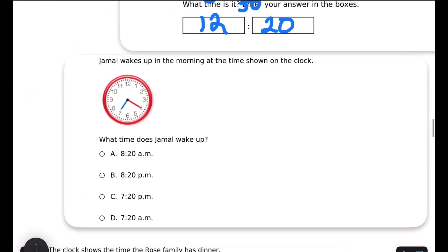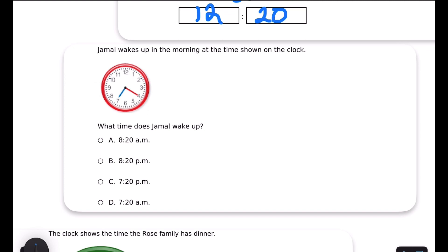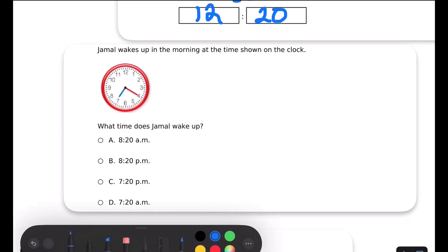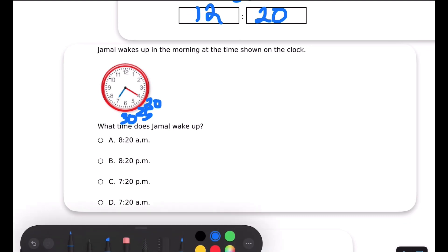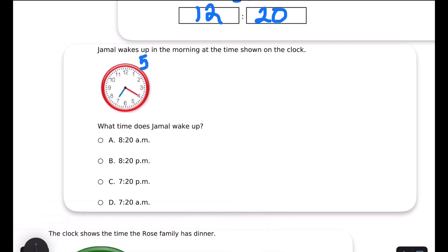Alright, last question. Jamal wakes up in the morning at the time shown on the clock. What time does Jamal wake up? Again, we're not going to annotate the whole clock this time. Let's just annotate where our numbers are. So I see it's on 4, so I'm going to say 20, 25, 30. Just a simple annotation. Or you could go backwards and you could start off with 5, 10, 15, 20.